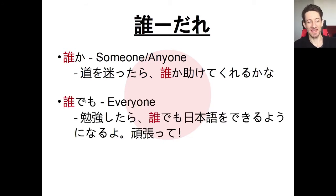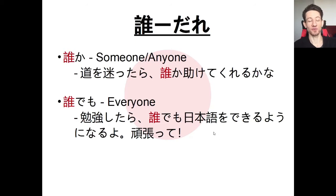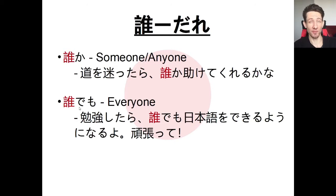Next we have dare demo, which means anyone — like it doesn't matter, everyone. For example: benkyou shitara, dare demo nihongo wo dekiru you ni naru yo, ganbatte — if you study, anyone can learn Japanese. This is a common structure with WH-words: nandemo (anything), doko demo (anywhere), itsu demo (anytime). So dare demo means anyone or everyone.